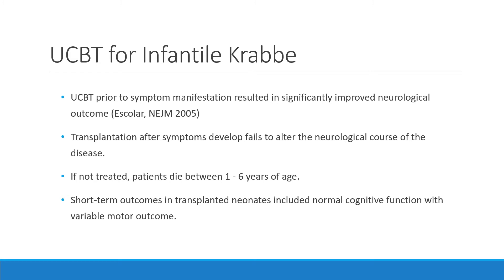We showed that transplantation after any symptom onset failed to alter the neurological course of the disease. Comparing untreated children to symptomatically treated children, there was really no difference. However, those treated before symptoms due to family history had significantly improved outcomes. Without treatment, patients die between one and six years of age, with 50% dying by two years. Short-term outcomes published here showed cognitive function stayed normal with variable motor outcomes.